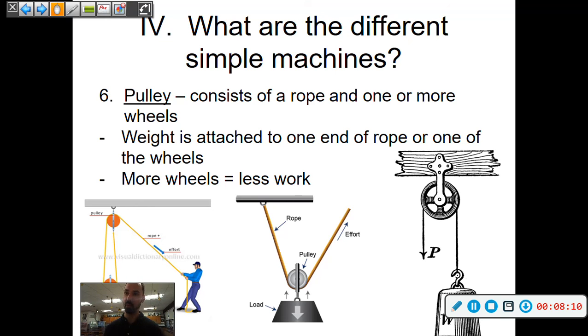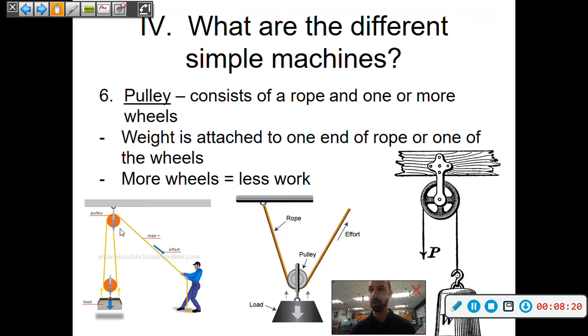And you end up pulling it upward by pulling down. More wheels equals less work. So an example of this one here with this worker, you see there's multiple pulleys on the system. The more you put, the more mechanical advantage you get out of the pulley.